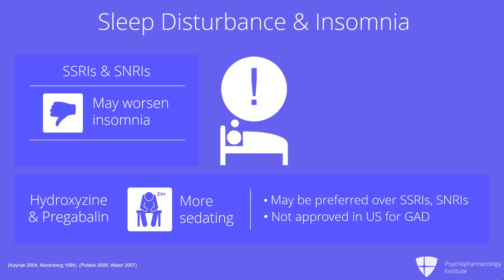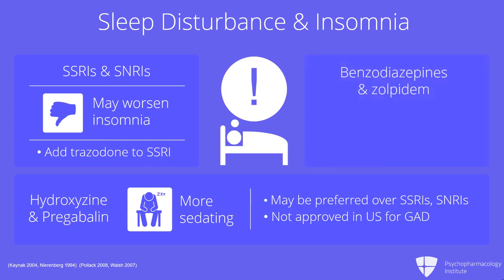Another option for dealing with insomnia due to SSRIs could be to add trazodone. There are two controlled studies where they added trazodone or placebo to an SSRI for insomnia and found good efficacy. Another thing you could add would be benzodiazepines for the insomnia.